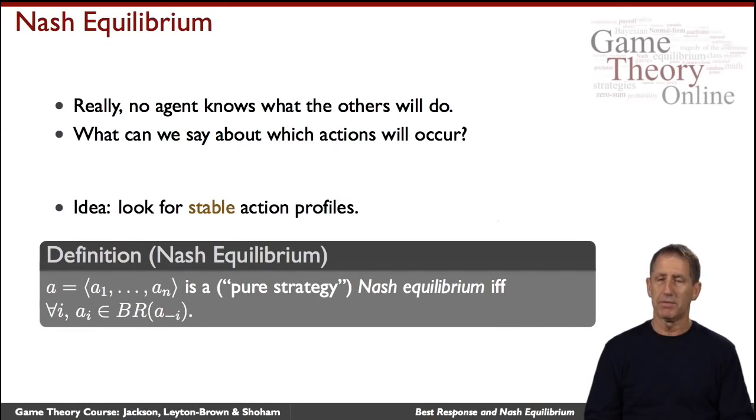And the Nash equilibrium, briefly, is a set of actions, one for each of the agents, such that each is the best response to the others.